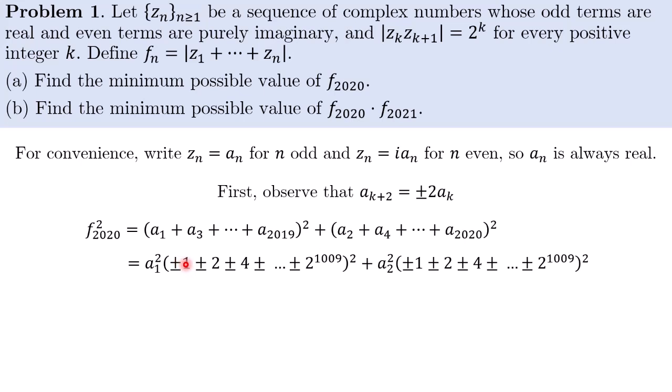Now using the observation, I'm going to pull out the absolute value of A1. So this is plus or minus 1. Then this is plus or minus 2, plus or minus 4 and so on until plus or minus 2^1009.